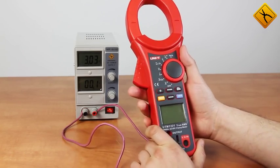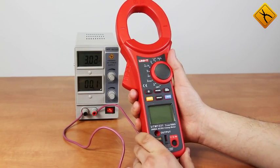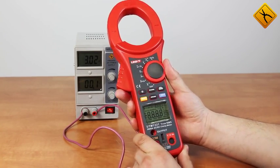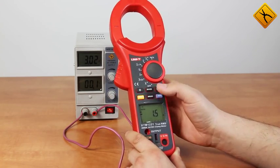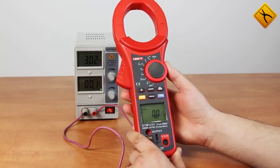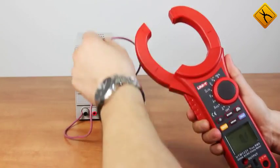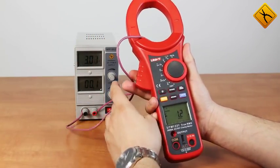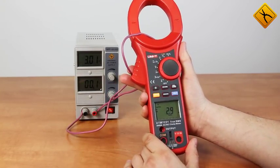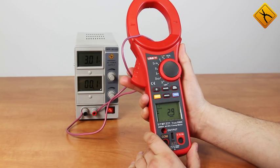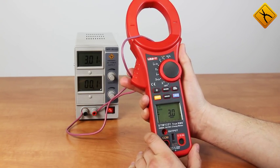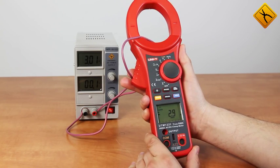Now, let's measure the DC current. Turn on the meter and switch to DC current measurement. Before starting the measurements, press the zero button to reset the display readings to zero. Start the measuring process. We may see a slight inaccuracy in the last order. Taking into account the DC current measuring range of 2000 Ampere, we consider the result excellent.